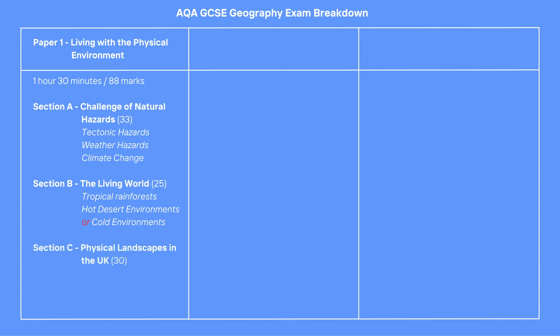The final section is Section C, and it is a little different, in that you answer any two questions of questions 3, 4 and 5. Question 3 is Coastal Landscapes in the UK, worth 15 marks. Question 4 is River Landscapes in the UK, also worth 15 marks. Question 5 is Glacial Landscapes in the UK, again worth 15 marks. You are only expected to have studied two of the topics, so check which two you have specialised in.